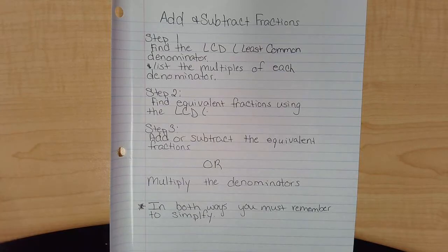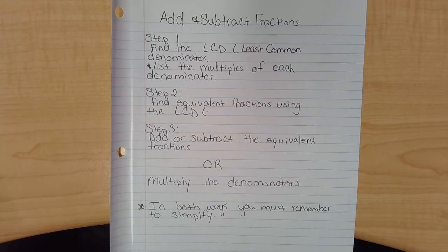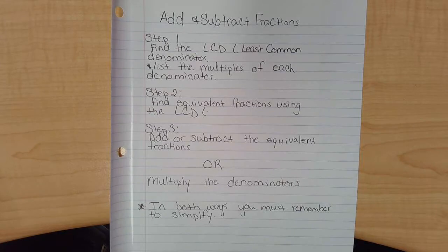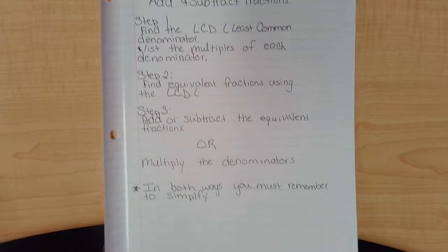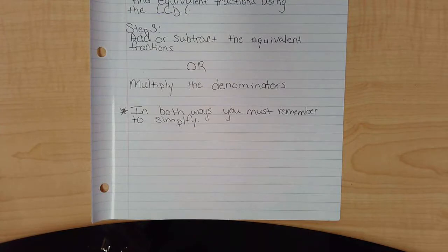Step two, find the equivalent fractions using the LCD — that is multiplying the numerator and denominator by the same thing. Then add or subtract the equivalent fractions. You can also multiply the denominators together to get a common denominator. In both ways, you must remember to simplify your answers if need be.